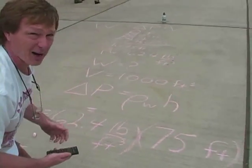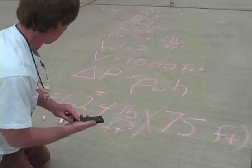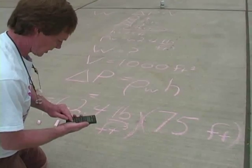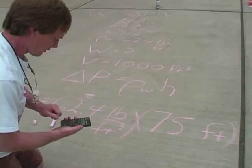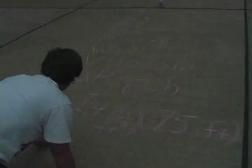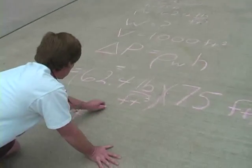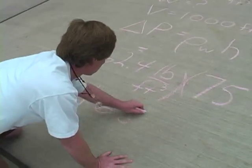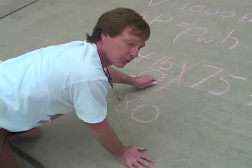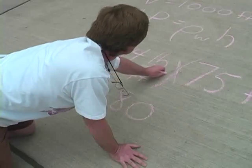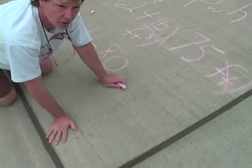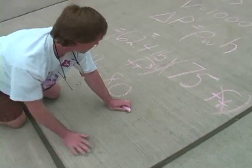That gives us 4,680. Let's check our units: pounds per cubic foot times feet gives pounds per square foot, which is good — those are units of pressure.